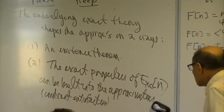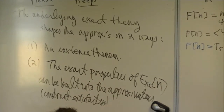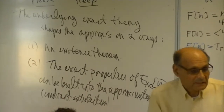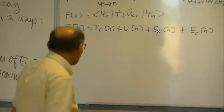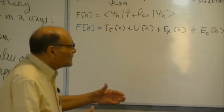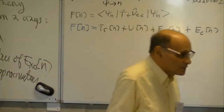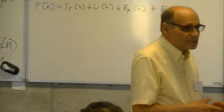The exact properties are used to approximate the kinetic without orbitals—that is one way to do it from the definition of the exact functional. The approach is always definition, definition, definition: to understand the definition of what exists and then to approximate the definition.